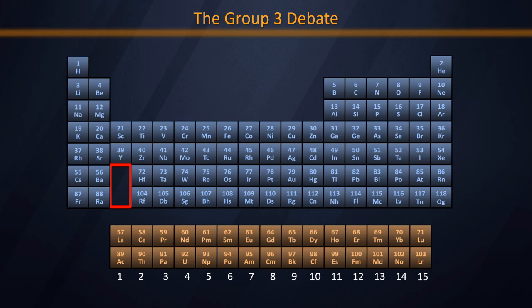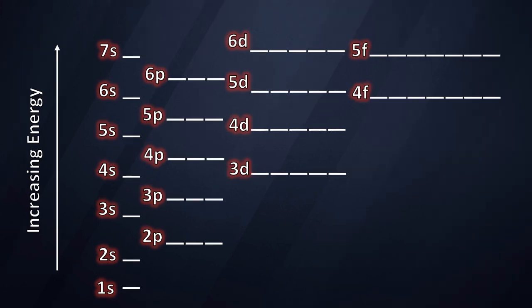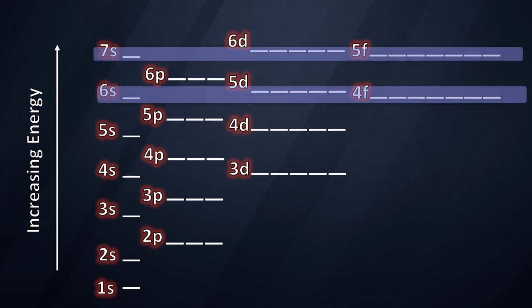Let's look at the extremes of the f block — lanthanum and lutetium — and see if we can come up with arguments for and against each. As we get into these higher energy levels, notice that the 4f, 5d, and 6s are all very close in energy. That makes them prone to anomalies in filling where they do not obey the Aufbau order.